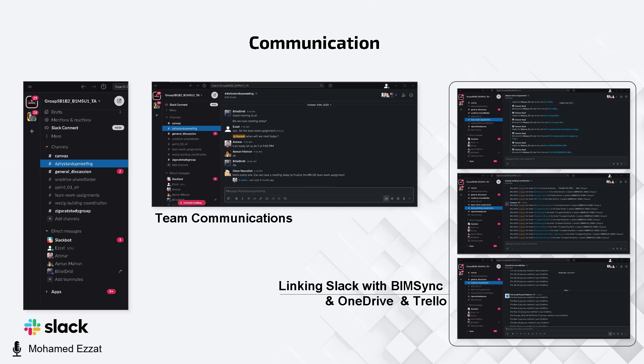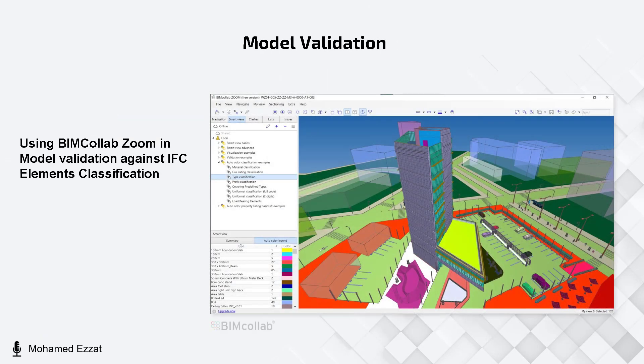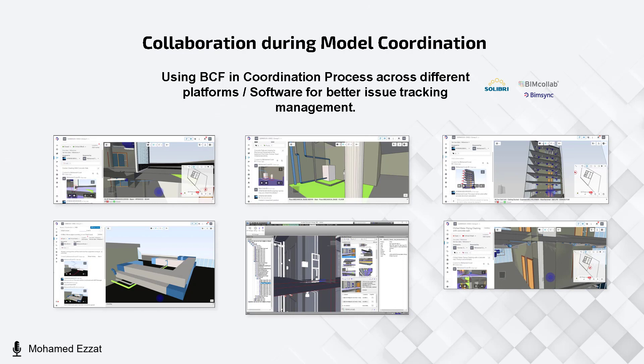Slack is connected to OneDrive, Trello, and BIMSync, making it easy to be notified of any change and keep all team members updated. When the architectural model was completed during the design phase, it was shared on BIMSync as a first step for coordination. BIMSync was used to share several design and coordination issues through BCF, and each member addressed and closed the issues assigned to them. BIMSync also served as the CDE platform where each discipline manager, BIM Manager, and BIM Coordinator shared their files in an organized folder structure. During later phases, we used BIMCOLLAB and Solibri for proper clash detection, issue management, and tracking.